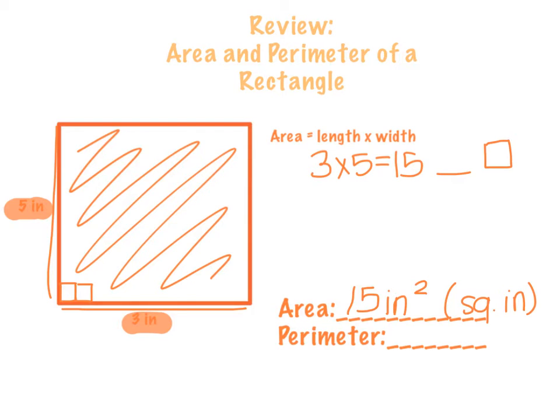For perimeter, remember, peri means around and meter means measure. We are measuring around our rectangle. Because I know that rectangles have opposite congruent sides, because 5 inches is on that side, the opposite side is also 5 inches. Same with 3. Because 3 inches is below, I can assume that the top is also 3 inches.